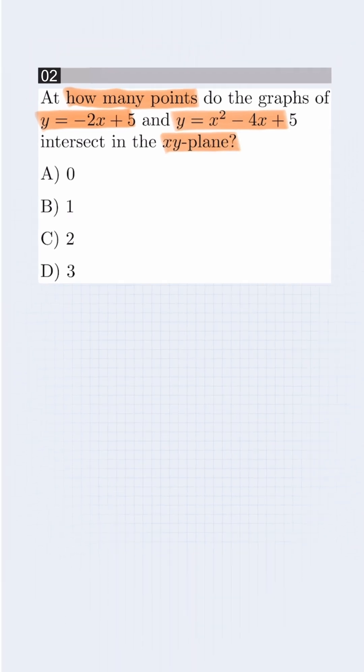First, you need to set the two equations equal to find the intersection points. So, it will be -2x + 5 is equal to x² - 4x + 5.